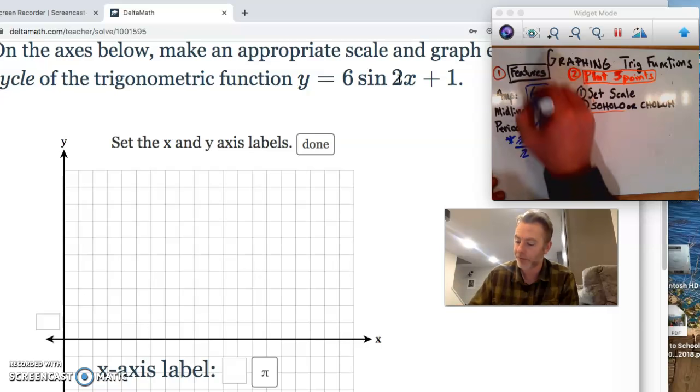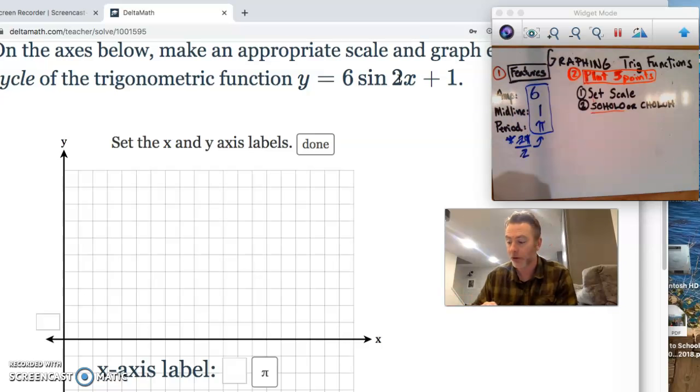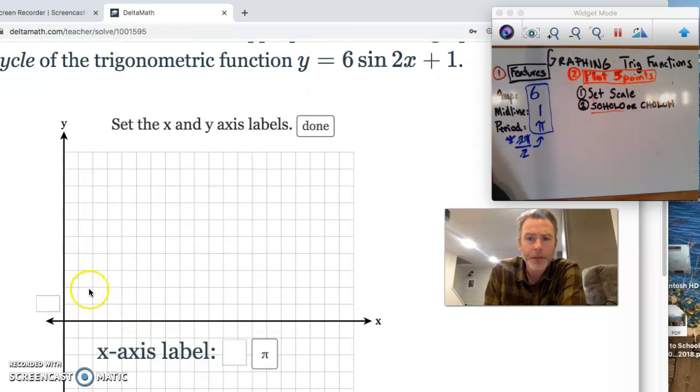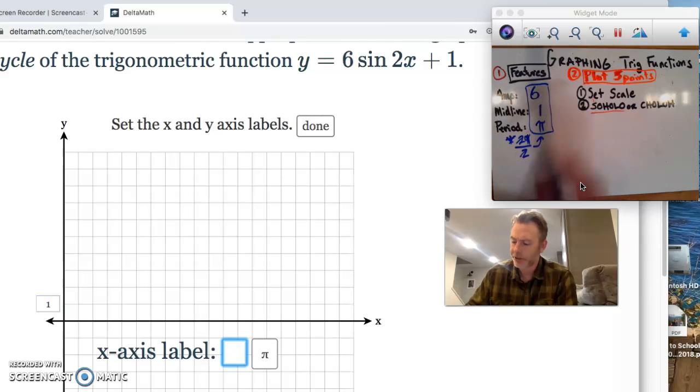So these are important features. We're going to use these to find our highs and lows. We're going to use these to find our midline or our origin. And we are going to use the period to set our scale over here. Before we can plot our 5 points, we're going to set our scale. Most of the time I set this y-axis at 1. We could set it at 2 - it goes up and down 6 units. I have no problem counting up 6 units here. You can always change it too, by the way. Our x-axis label here has to do with what our period is.